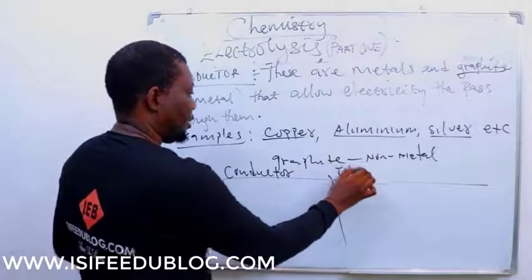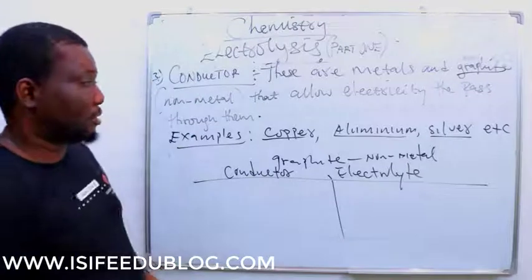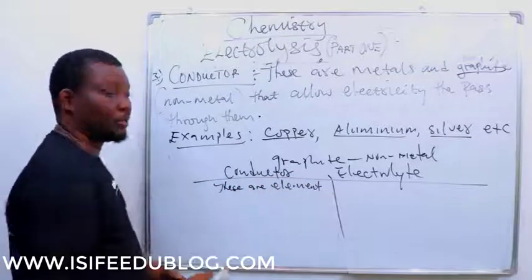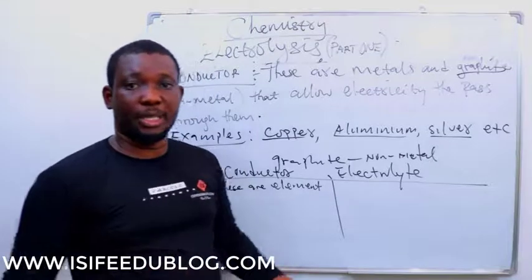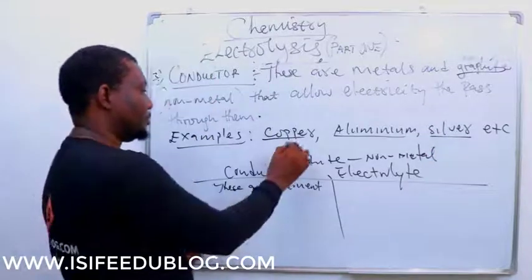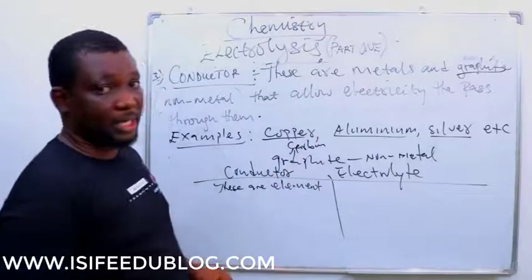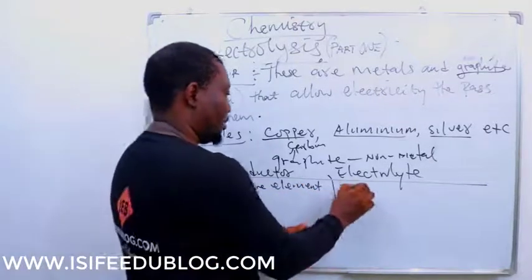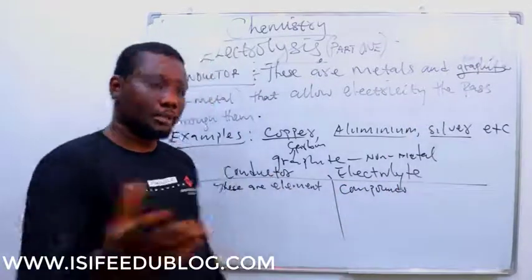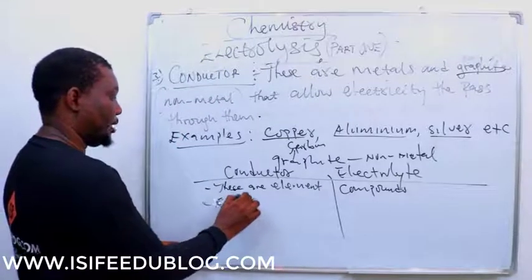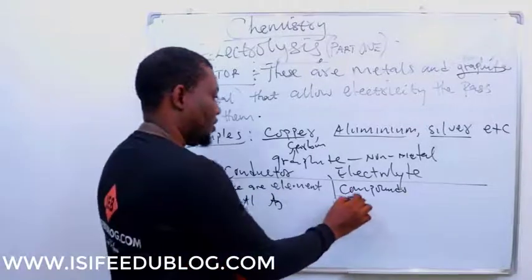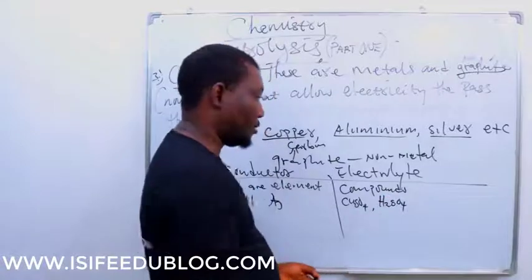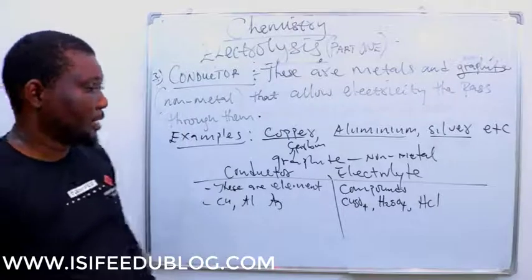Comparing conductors and electrolytes: conductors are elements — copper, aluminium, silver, and graphite (which is carbon, an allotrope). Electrolytes, on the other hand, are compounds — such as copper(II) tetraoxosulfate(VI), H2SO4, and HCl. Conductors allow current to flow through them most commonly in their solid state, while electrolytes must be in aqueous or hydrated form to conduct.